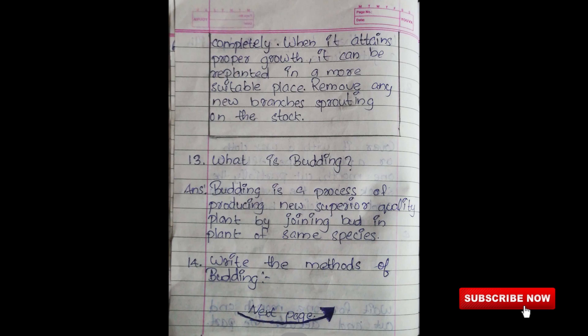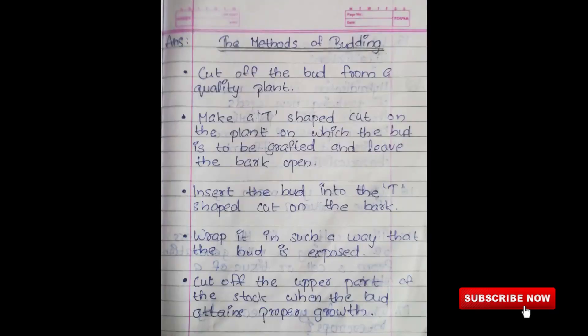Thirteenth question: What is budding? Answer: Budding is a process of producing a new superior quality plant by joining the bud of the same species. Fourteenth question: Write the methods of budding. Answer: Cut off the bud from a quality plant. Make a T-shaped cut on the plant on which the bud is to be grafted and leave the bark open. Insert the bud into the T-shaped cut on the bark. Wrap it in such a way that the bud is exposed. Cut off the upper part of the stock when the bud attains proper growth.